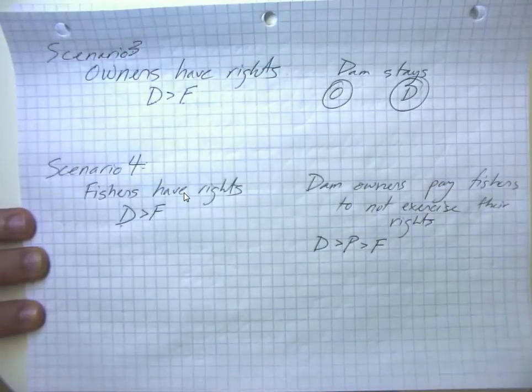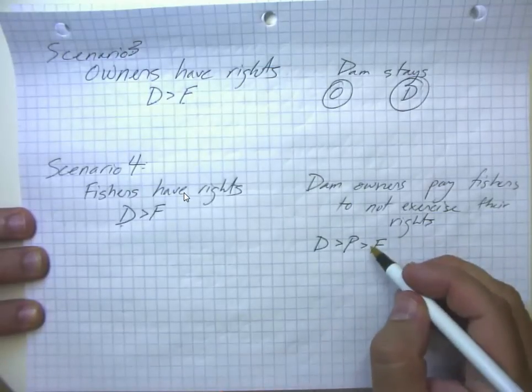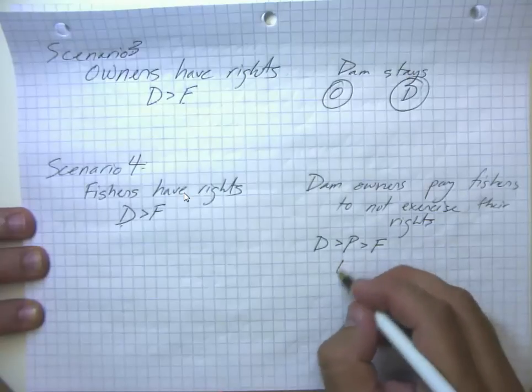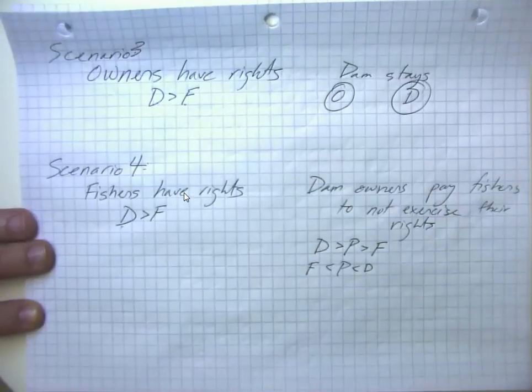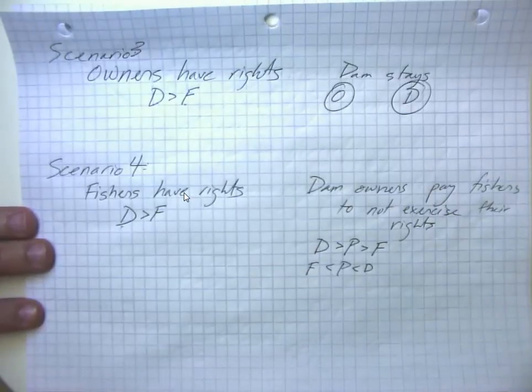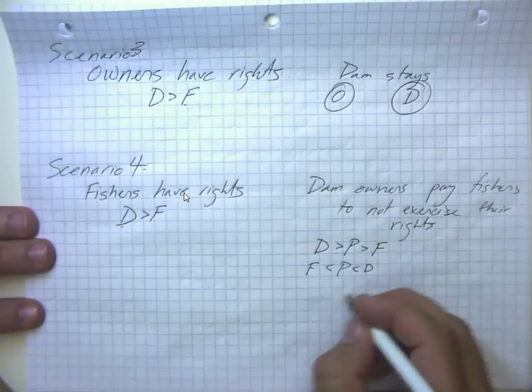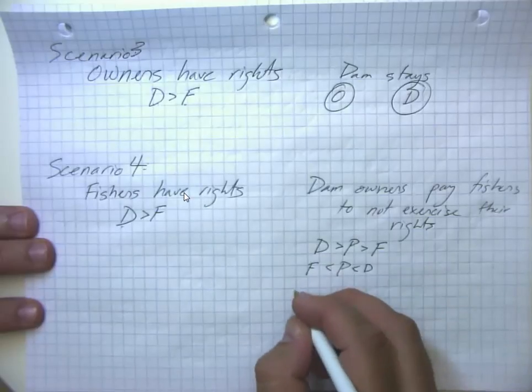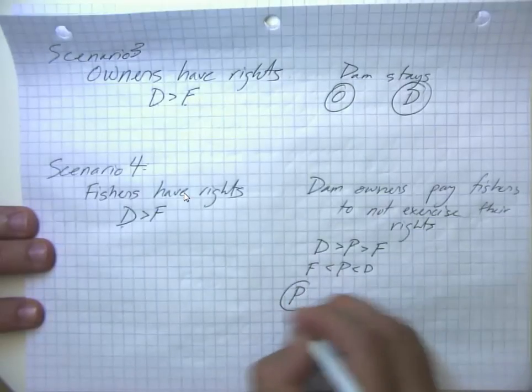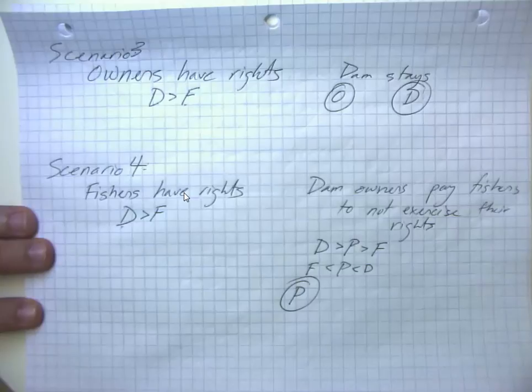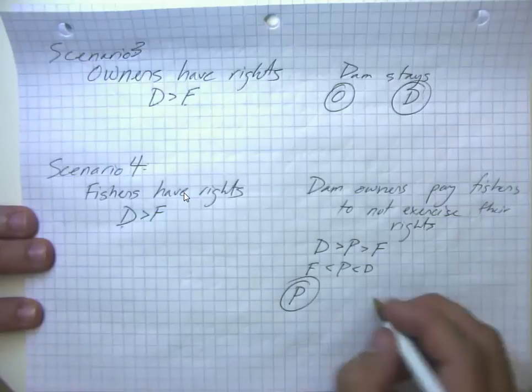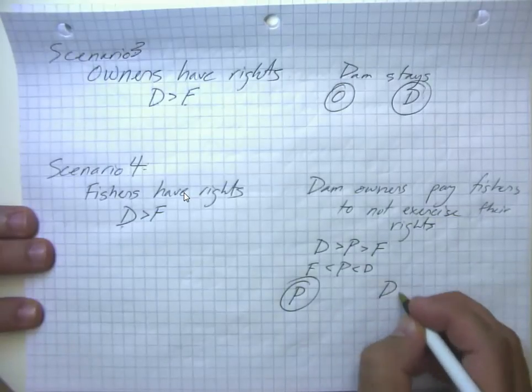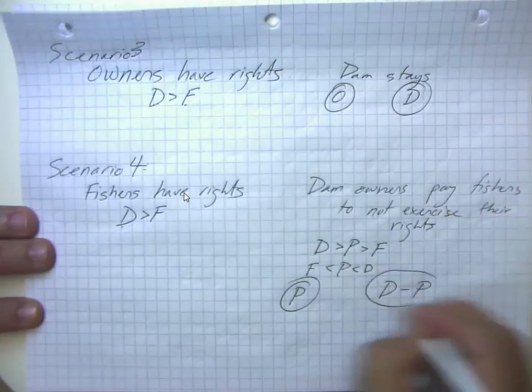I think I might have reversed the inequalities here. No, that works too. I could have also said it this way. Whichever way makes more sense to you. So the distribution of economic welfare in this case is that the fishermen get paid that price P and the dam owners get their profits minus what they paid to the fishermen.